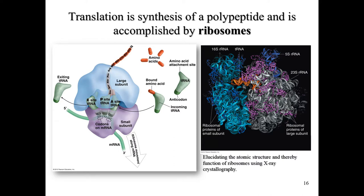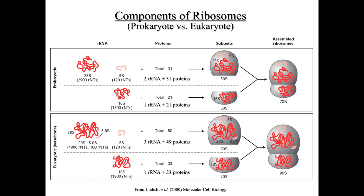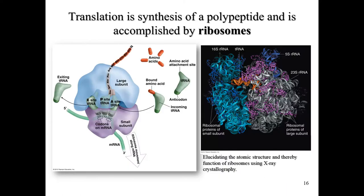The subunits themselves are composed of ribosomal proteins and ribosomal RNA, or rRNA. That's very important to remember — there are two principal components of both the large and small subunits: ribosomal proteins and ribosomal RNA.